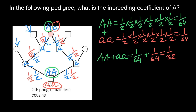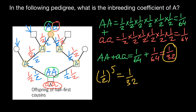Now I want to show you a shortcut method. The shortcut is simply to count the nodes, excluding the person of interest and including the common ancestor. How many nodes do we have here? One, two, three, four, and five — so we have five nodes. Our calculation is one half to the power of five, and the answer is one over 32, the same answer as before, but much faster.